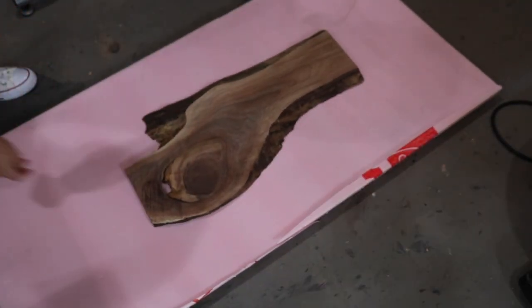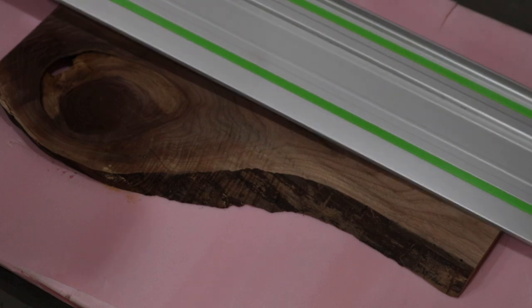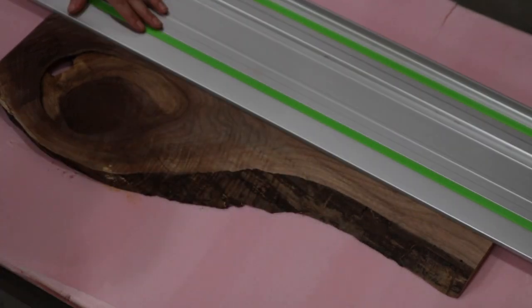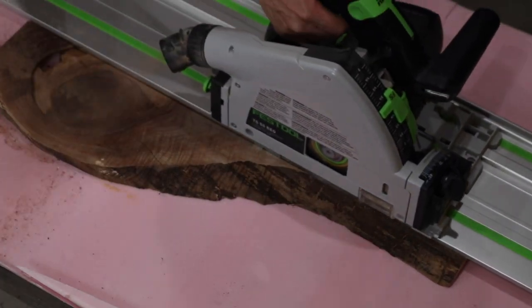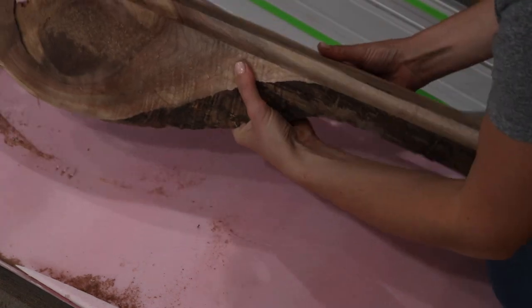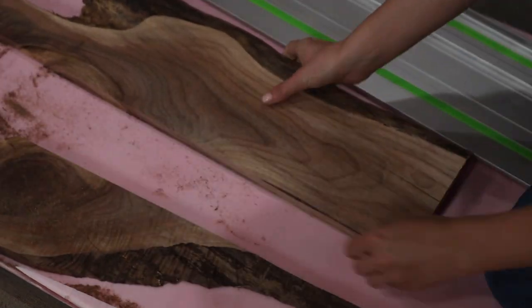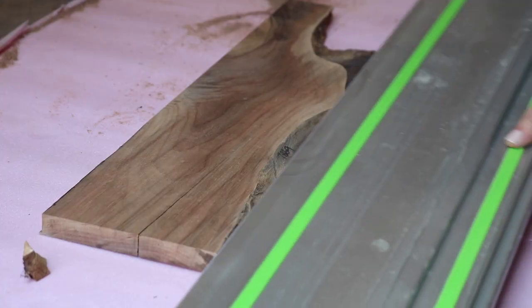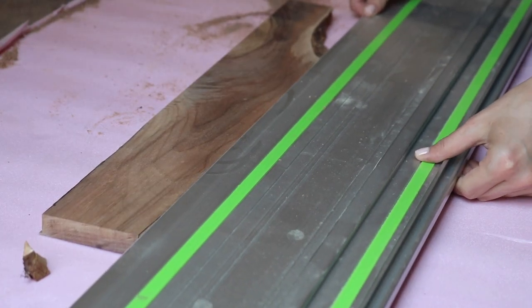After running it through the planer, we then set it down on a piece of foam and used the track saw to cut it into some smaller strips. Now, the reason we used the track saw instead of the table saw or the miter saw was because this was just a safer way. You could use a circular saw with a guide to cut a piece just like this in your own shop if you don't have a track saw.